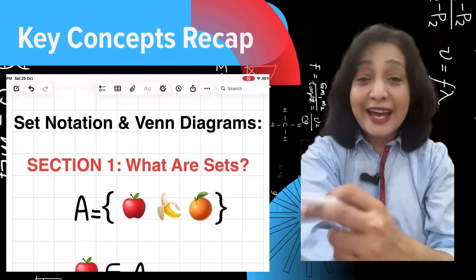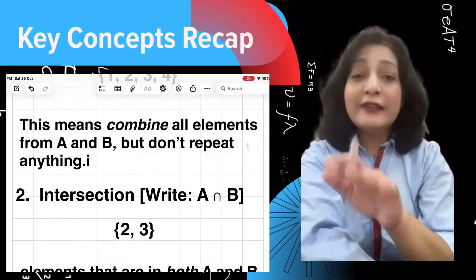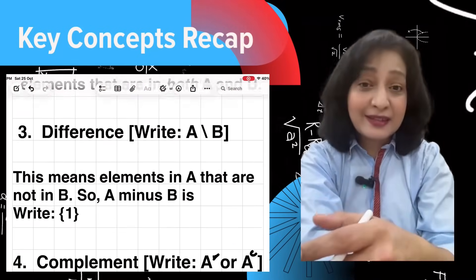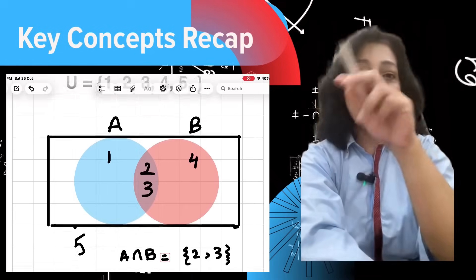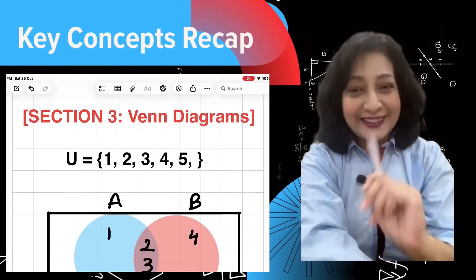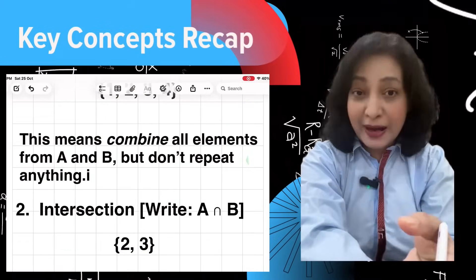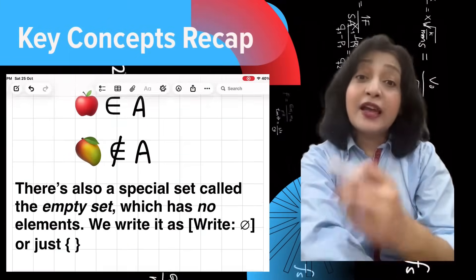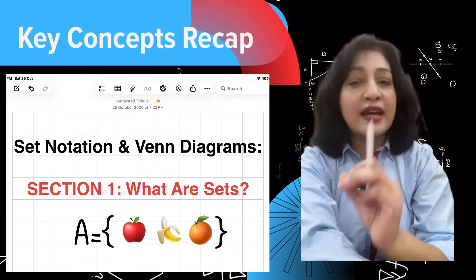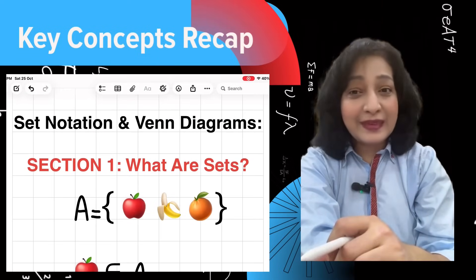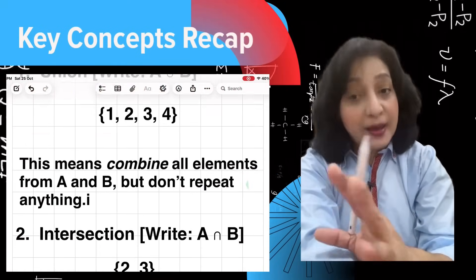Let's recap. Look at the screen. A set is a collection of elements written with curly braces. We use symbols like ∪ for union, ∩ for intersection, and A' for complement. Venn diagrams help us see these operations with circles and shading. You are now ready to tackle set questions in your O-level exams.